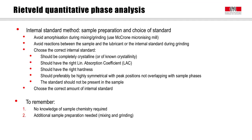Another property is that the internal standard should have known crystallinity — its amorphous content should be known and should not be present in the sample. Preferably, a standard material should have high crystal structure symmetry and have peaks that do not overlap with the main reflection peaks of the phases present in the material. In addition, it is good if there are no microabsorption problems, which would occur if there is a large X-ray absorption contrast between the phases in your sample and the standard. If this were the case, microabsorption problems may occur and one would have a falsified or biased quantification.